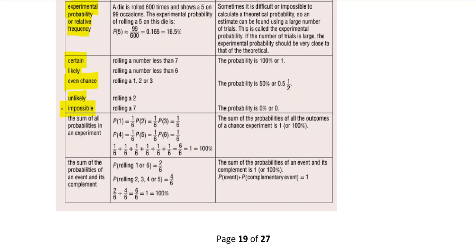Impossible means you can't get it at all — rolling a seven on a six-sided dice is impossible. The sum of all probabilities in an experiment is always equal to one, or 100%. We usually work with fractions, occasionally decimals and percentages. For example, the sum of the probabilities of an event and its complement also equals one — on a coin, the probability of heads is one half and tails is one half, and they add to one.